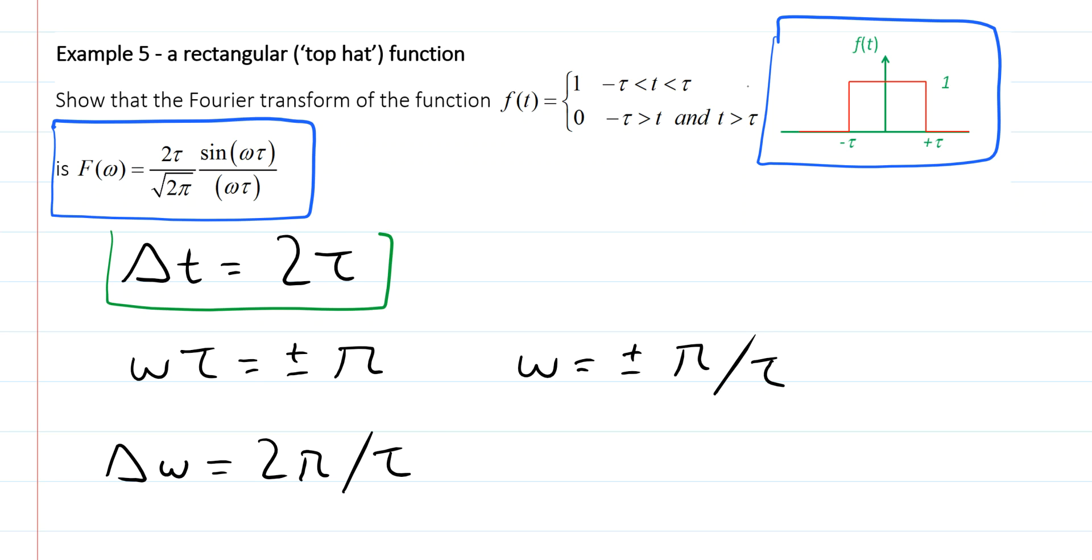We have the width of the original function. We said that's equal to 2 tau. And we have the width of the Fourier transform. That's equal to 2 pi divided by tau. And what we can see is they are inversely related to each other.